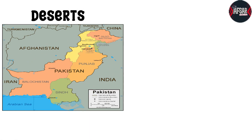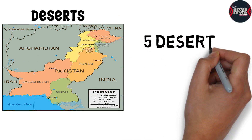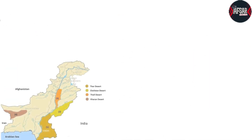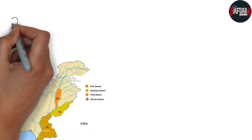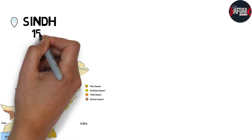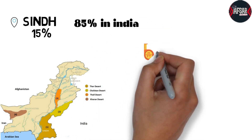Now, deserts of Pakistan. In Pakistan there are 5 deserts. Number one is Thar, located in Sindh. 15% of Thar is in Pakistan and 85% is in India.